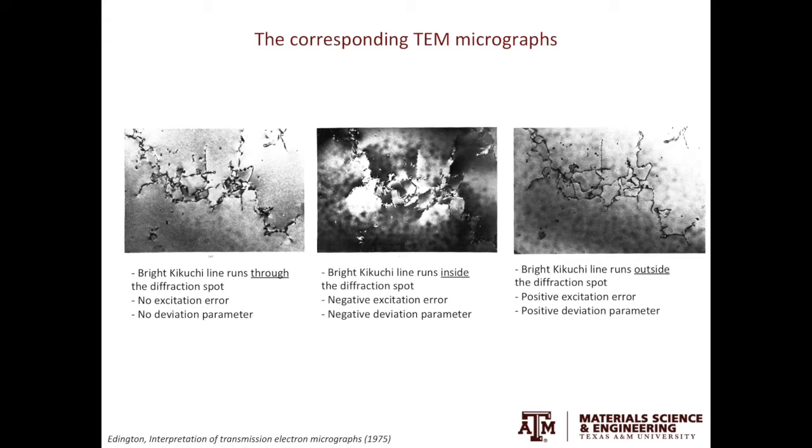In the third case, when you have the bright Kikuchi line going through slightly outside the diffraction spot or the diffracted beam, you'll have positive excitation error and deviation parameter. This gives you the best imaging condition. Under this imaging condition, you tilt the matrix slightly further away from the Bragg's condition, giving you a cleaner and better background. The dislocation lines will be highlighted. The regions next to the dislocation lines will not show too much contrast. When you do dislocation imaging in the future, please remember use the third imaging condition to give you the best results.